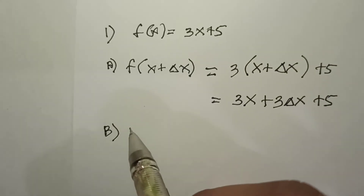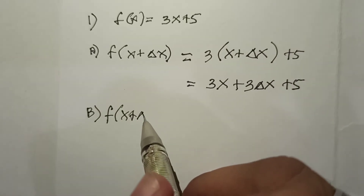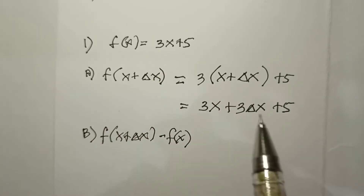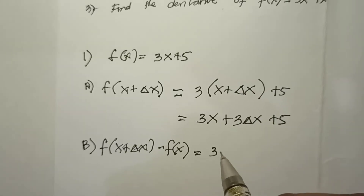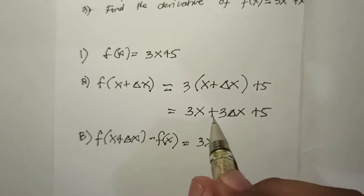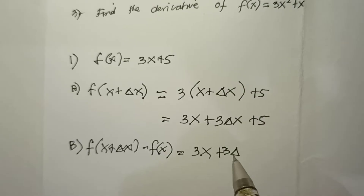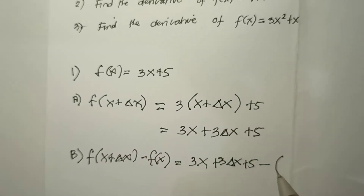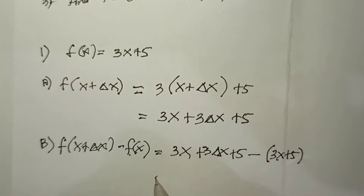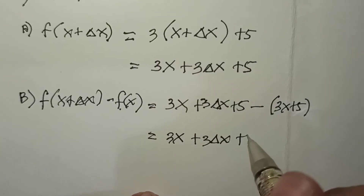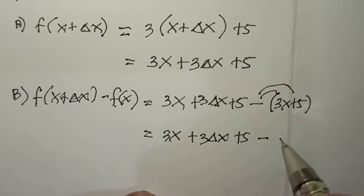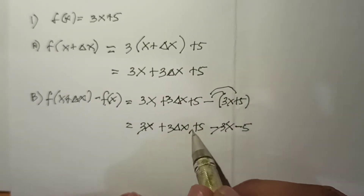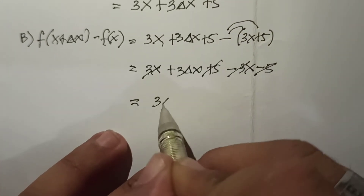The second step is find f(x + Δx) minus f(x). This answer will be subtracted from f(x). So we have 3x + 3Δx + 5 minus f(x), which is 3x + 5. Distributing the negative gives 3x + 3Δx + 5 - 3x - 5. We cancel 3x and 5, so the remaining is 3Δx.